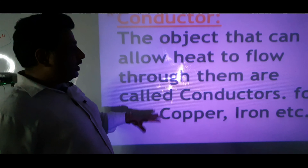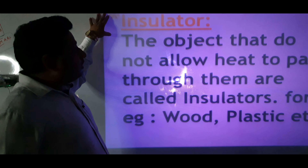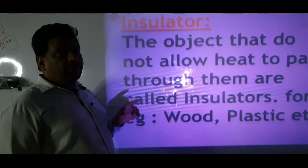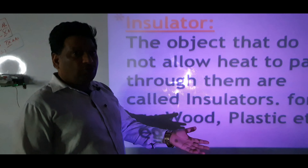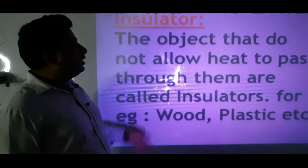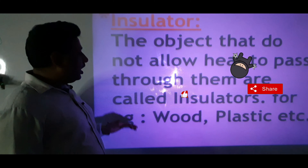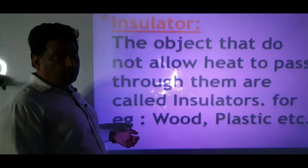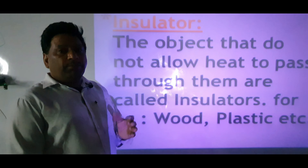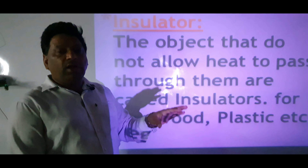Insulators are objects that do not allow heat to pass through them. Conductors allow heat to pass through them, while insulators do not allow heat to pass through them. Objects that do not allow heat to pass through them are called insulators. For example, wood and plastic. The handles of utensils are made of wood or plastic.